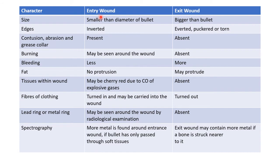Now let us see the differences between entry wound and exit wound. The size of an entry wound will be smaller than the diameter of a bullet, whereas the size of an exit wound will be bigger than the bullet. The edges of an entry wound will be inverted, whereas in the case of an exit wound they will be everted, puckered, or torn.